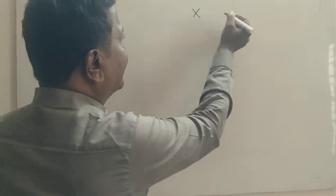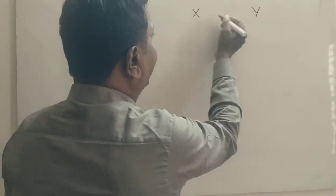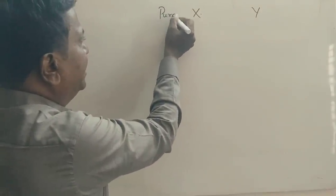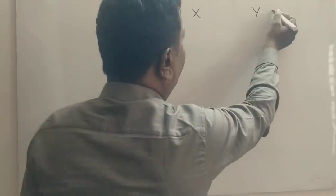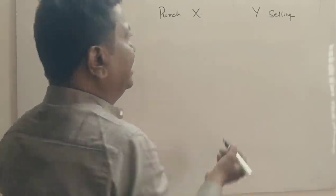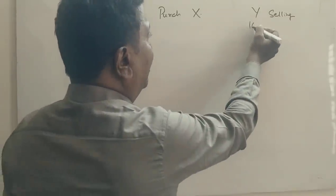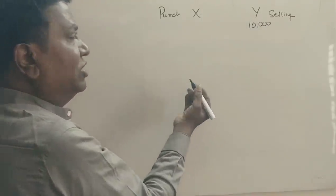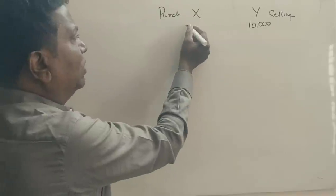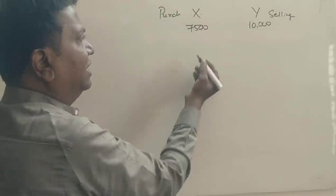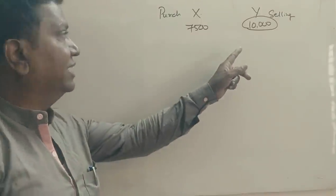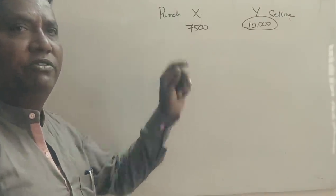For example, X company and Y company. Y company shares — X company purchases them. So X company is the purchasing company and Y company is the selling company. X company acquires Y company, which has 10,000 shares. X company holds 7,500 shares.